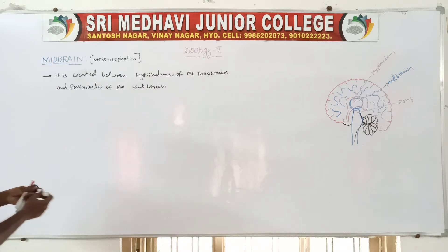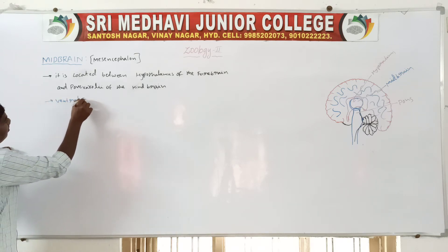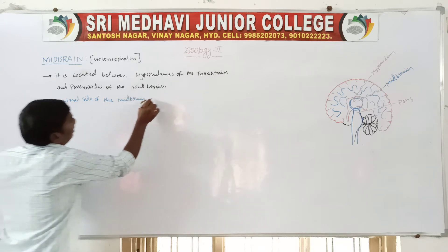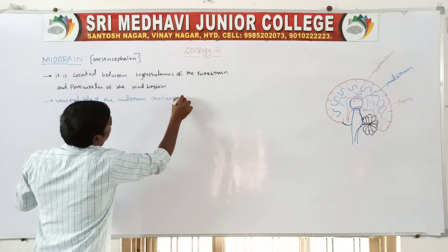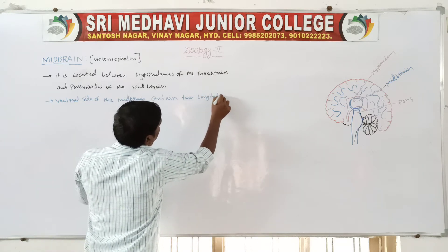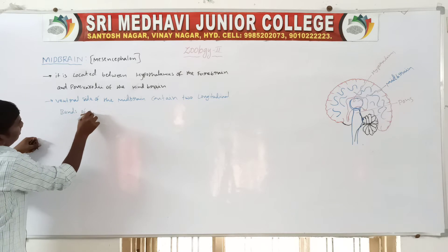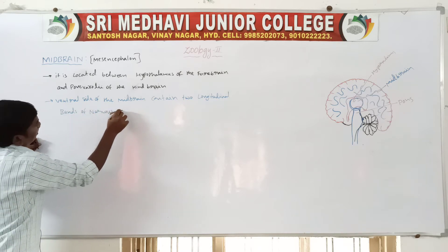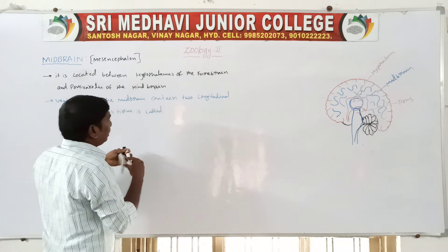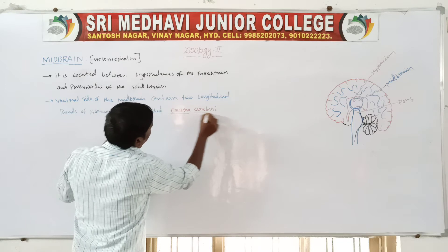The ventral side of the midbrain contains two longitudinal bands of nervous tissue. These two longitudinal bands are called as crura cerebri.